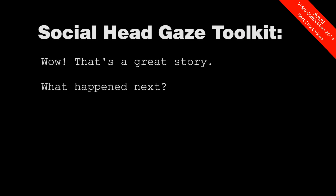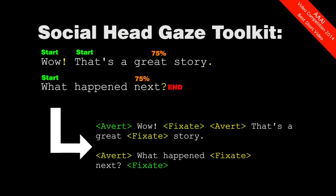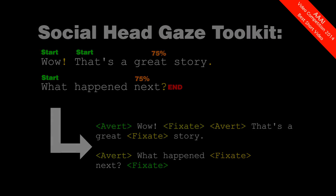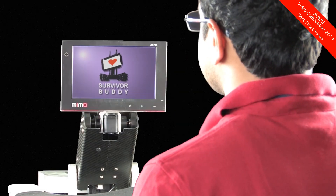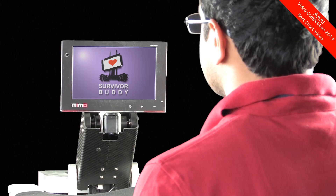The Social Head Gaze Toolkit uses the syntax of English sentences to provide robots with the ability to autonomously generate appropriate head movements. This makes interacting with the robot more straightforward and pleasant.